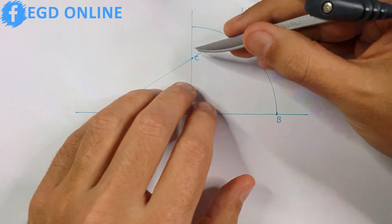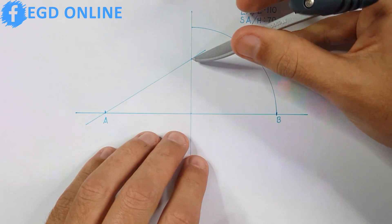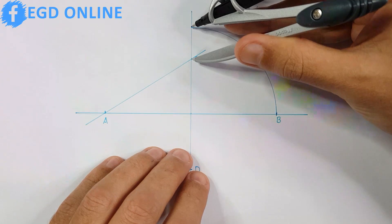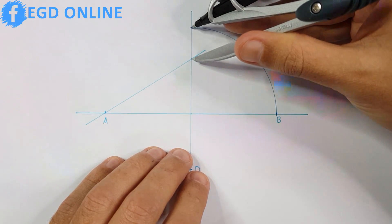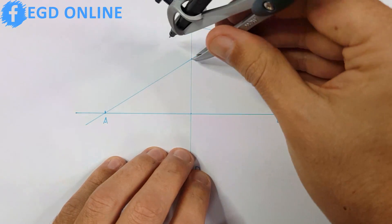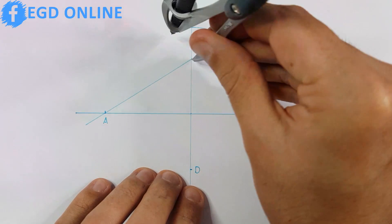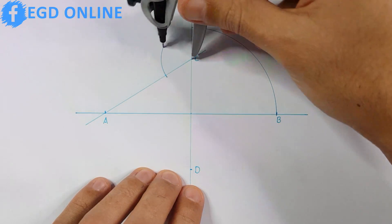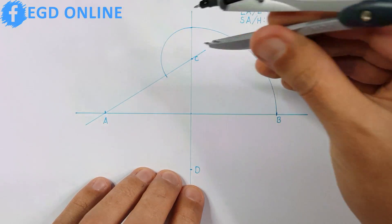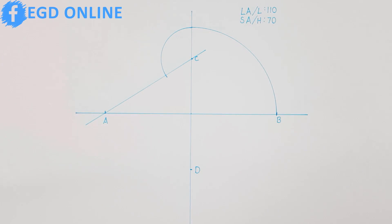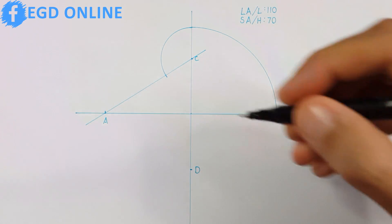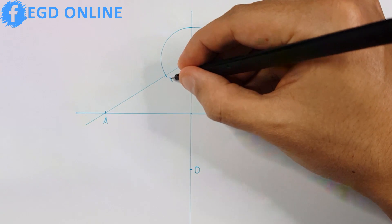Now place your compass on point C and project your projected point B onto line A-C. Label this point as point E.